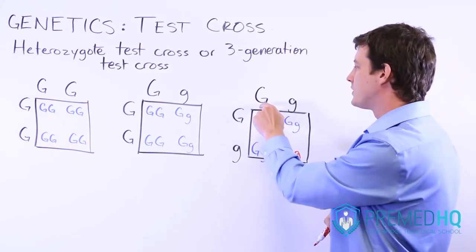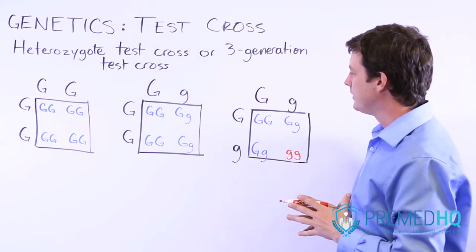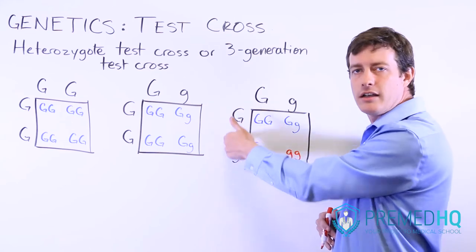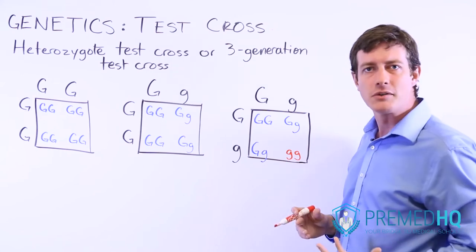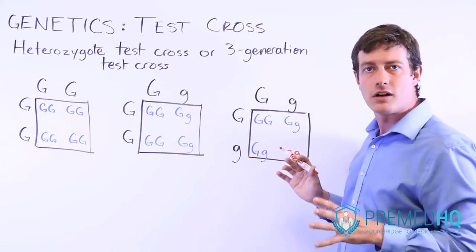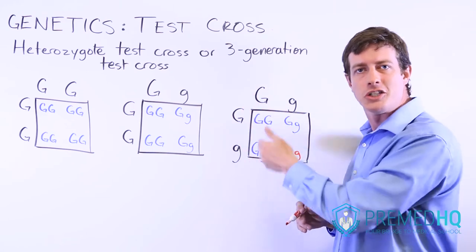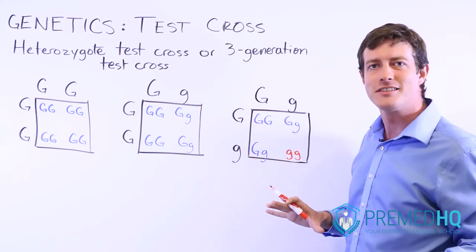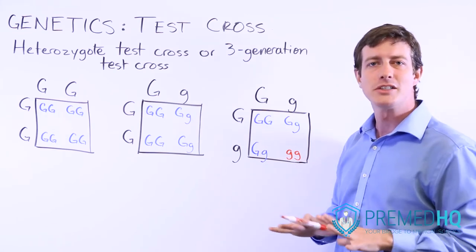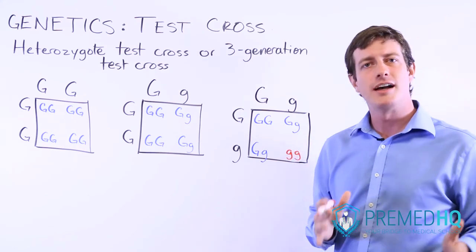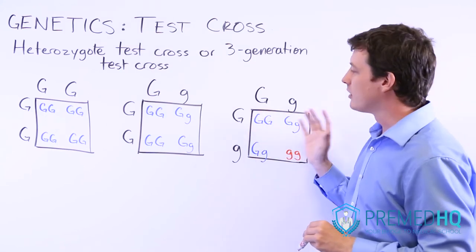So if you do a test cross using a heterozygote and get a 3:1 ratio, you know the unknown parent is heterozygous. The test cross essentially involves using one known genotype and breeding enough offspring so that the ratios become very evident. Test crosses are usually done with a homozygous recessive because that's the easiest way to determine the unknown genotype — but you can also perform them with a heterozygous organism.